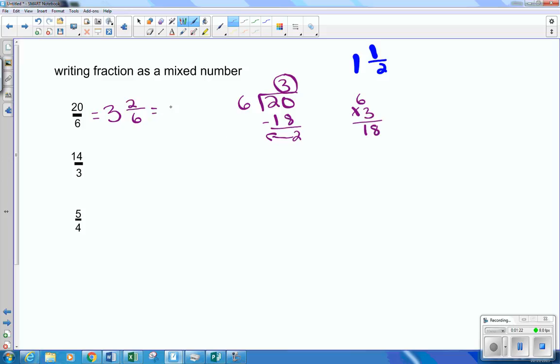Now, we can reduce that as 3. And what number goes into 2 and 6? Well, 2 will go into both of them. 2 divided by 2 is 1. And 6 divided by 2 is 3. So this does reduce down to 3 and a third.